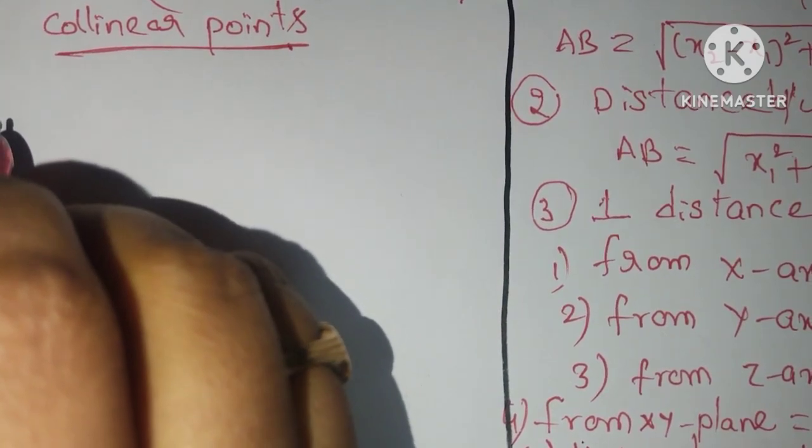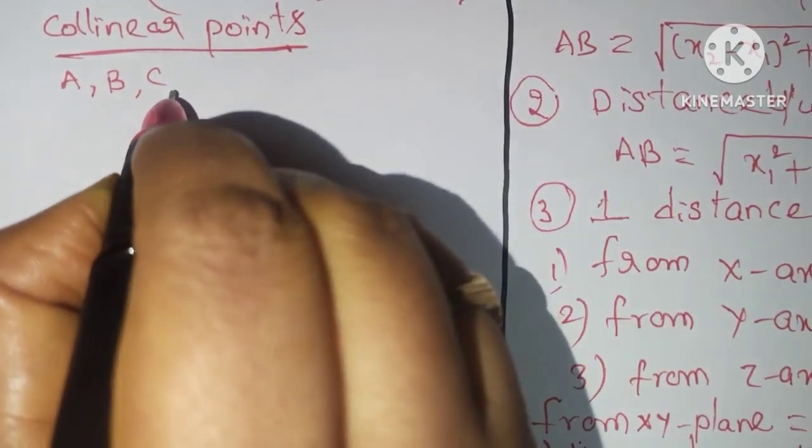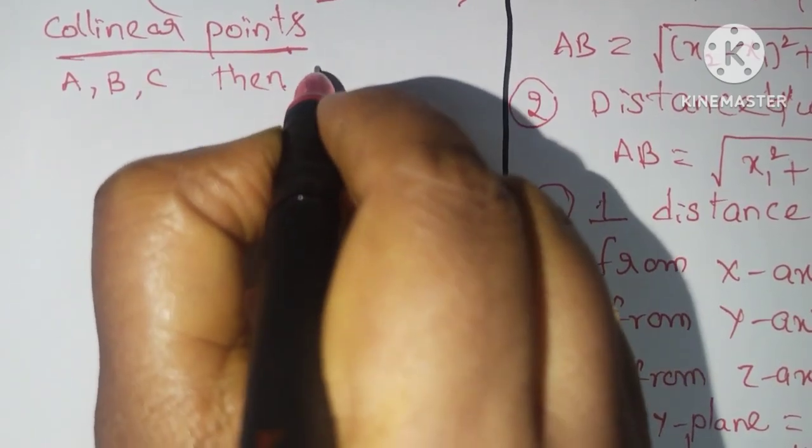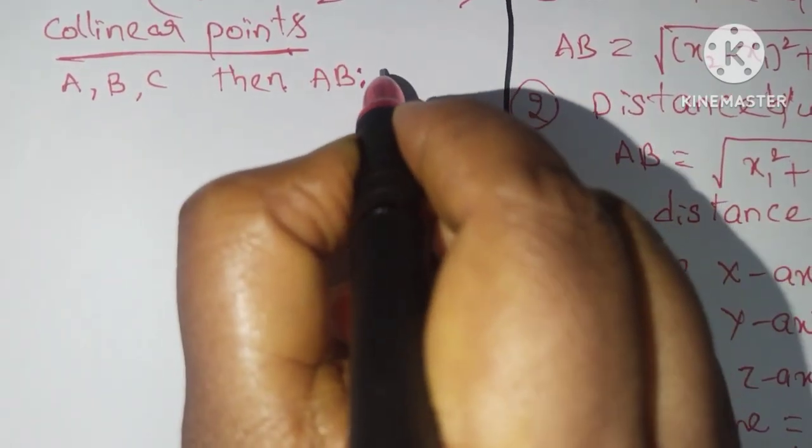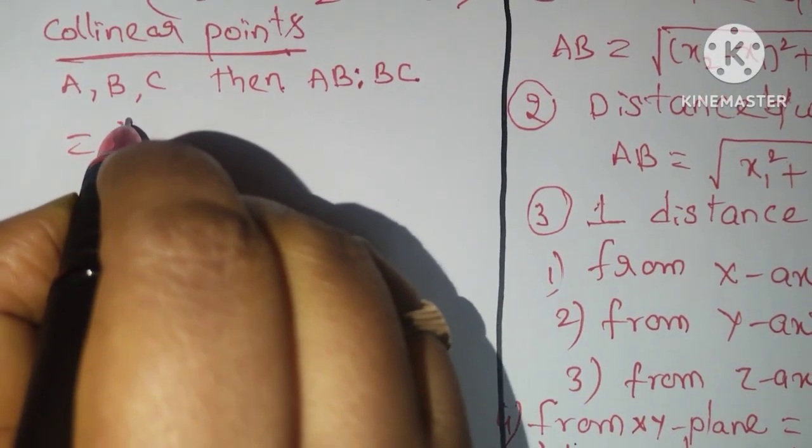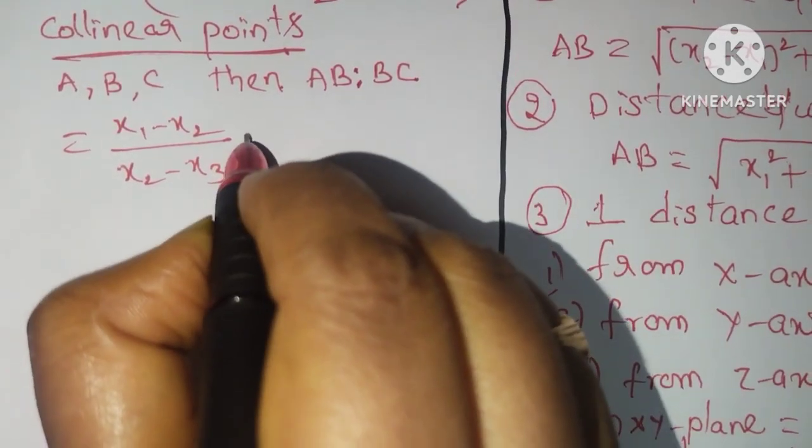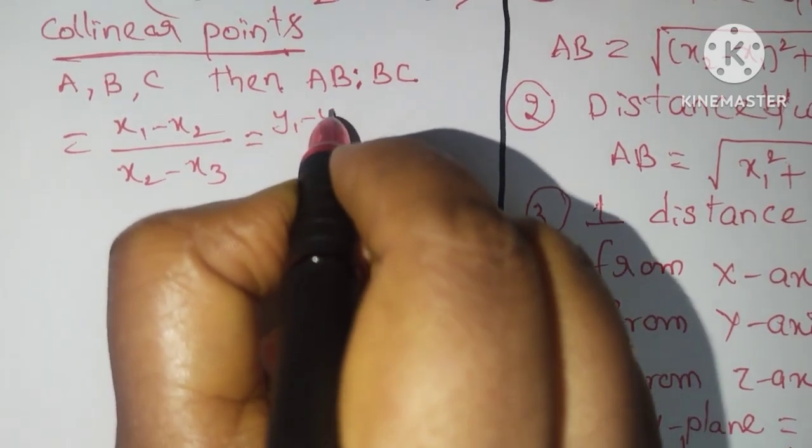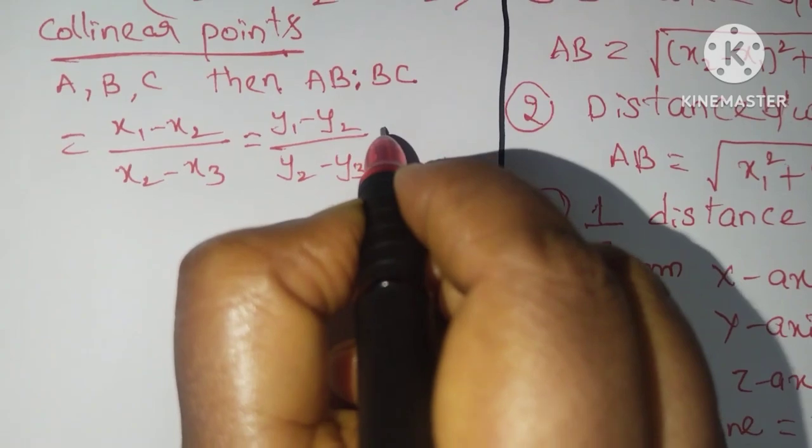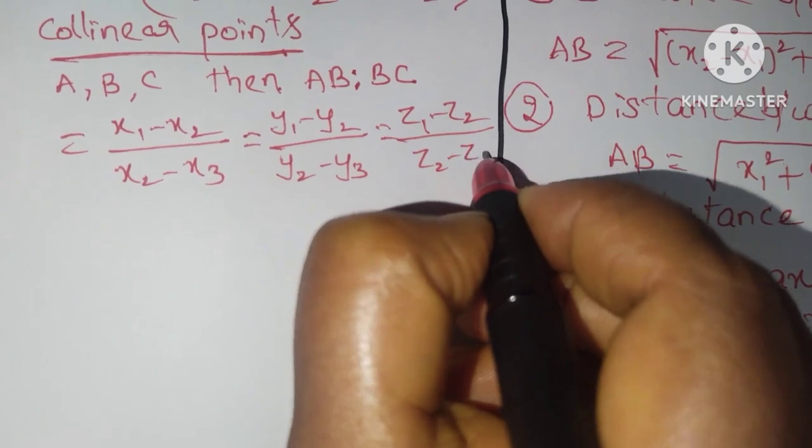Suppose I am taking ABC as collinear points. Then AB is to BC equals to the formula: X1 minus X2 by X2 minus X3, that equals to Y1 minus Y2 by Y2 minus Y3, that equals to Z1 minus Z2 by Z2 minus Z3.